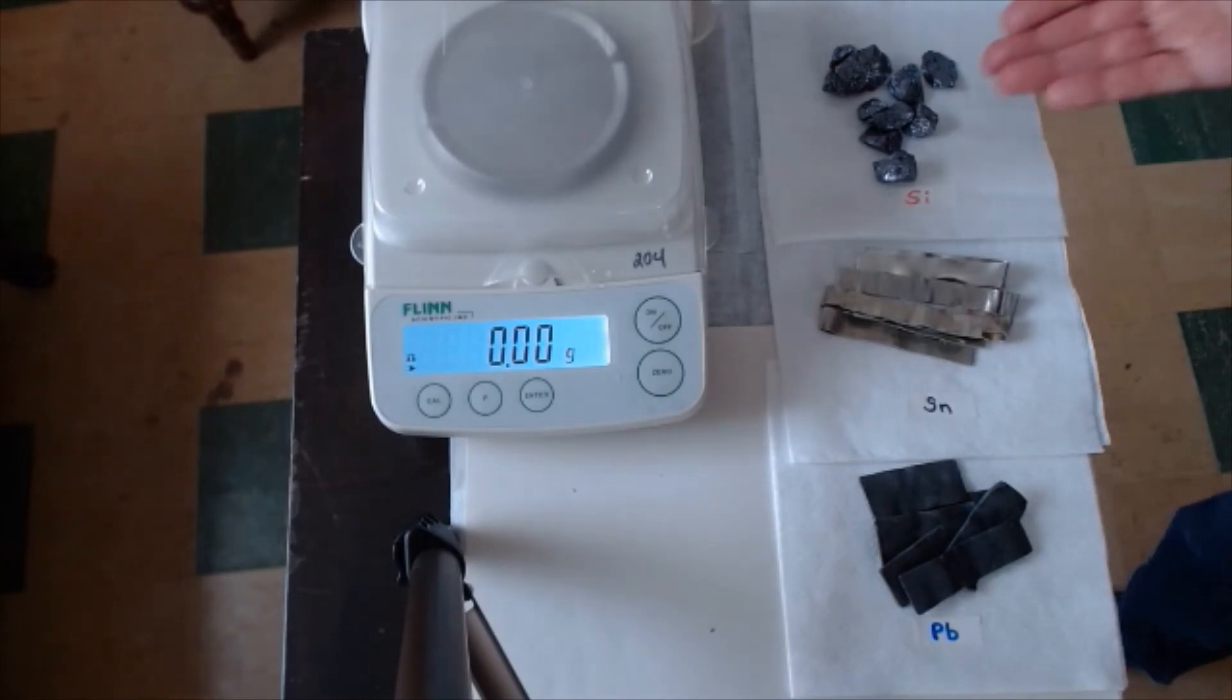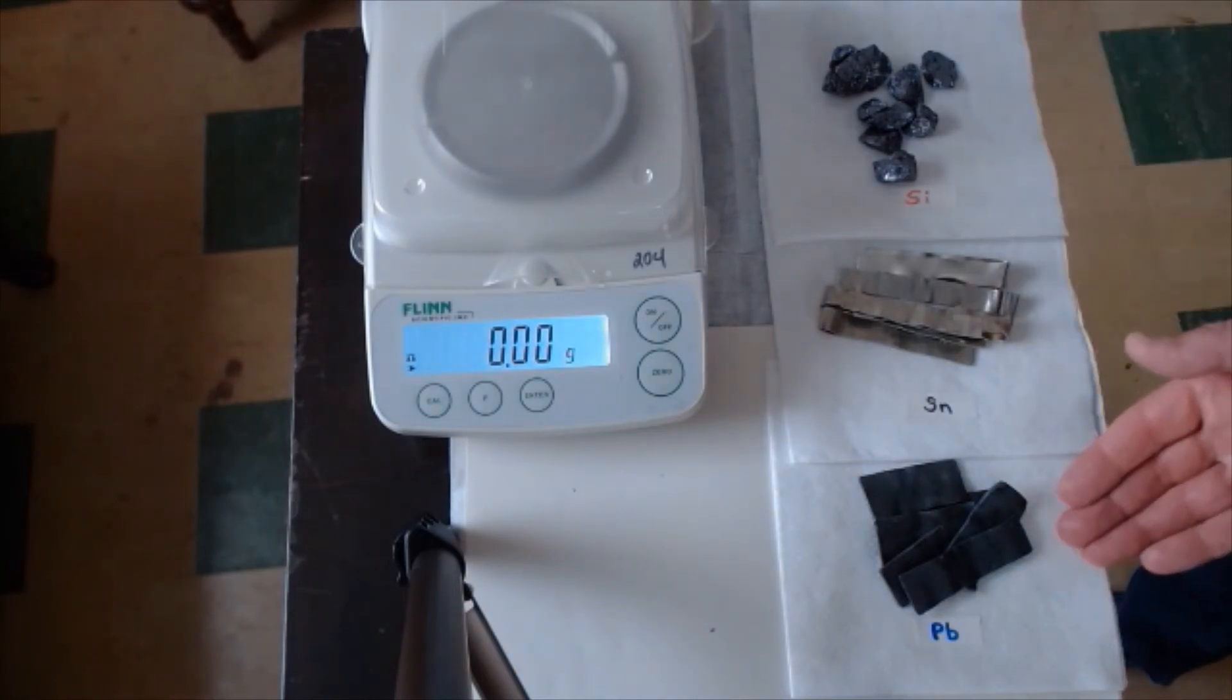Then you'll see the next step is to do a few calculations. You need to find the actual volume of each element by subtracting the initial volume from the final volume. And then using the mass and the volume, you're going to calculate the density of each element.